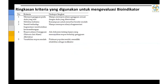Ada tabel ringkasan kriteria yang digunakan untuk mengevaluasi bioindikator. Yang pertama, merespon gangguan pada skala yang ada, deskripsi singkatnya mampu merespon adanya gangguan sesuai dengan skala yang ditentukan, artinya sensitif terhadap perubahan baik lingkungan yang disebabkan oleh alami maupun antropogenik manusia. Yang kedua adalah mobilitas terbatas, kemampuan untuk menyebar bersifat rendah, artinya suatu organisme harus memiliki mobilitas terbatas sehingga sebagai bioindikator ia memiliki kemampuan terbatas untuk menghindari gangguan.